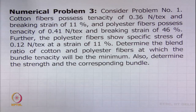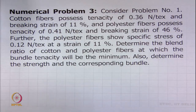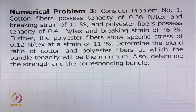This problem is basically an extension of problem number 1 of this module. In problem number 1, the following information was given: cotton fibers possess a tenacity of 0.36 Newton per tex, breaking strain 11 percent. Polyester fiber possesses a tenacity of 0.41 Newton per tex and breaking strain 46 percent. Further, the polyester fiber shows specific stress of 0.12 Newton per tex at a strain of 11 percent. Determine the blend ratio of cotton and polyester fibers at which the bundle tenacity will be minimum, and also determine the strength of the corresponding bundle.